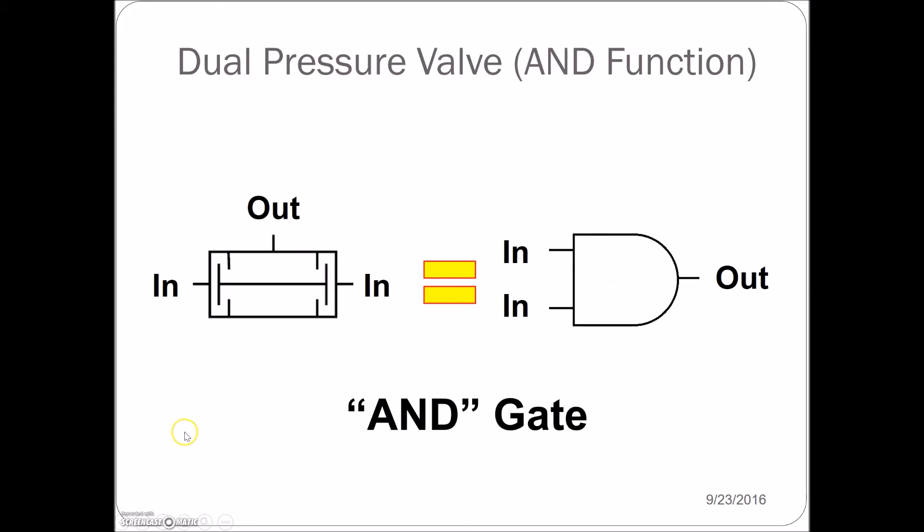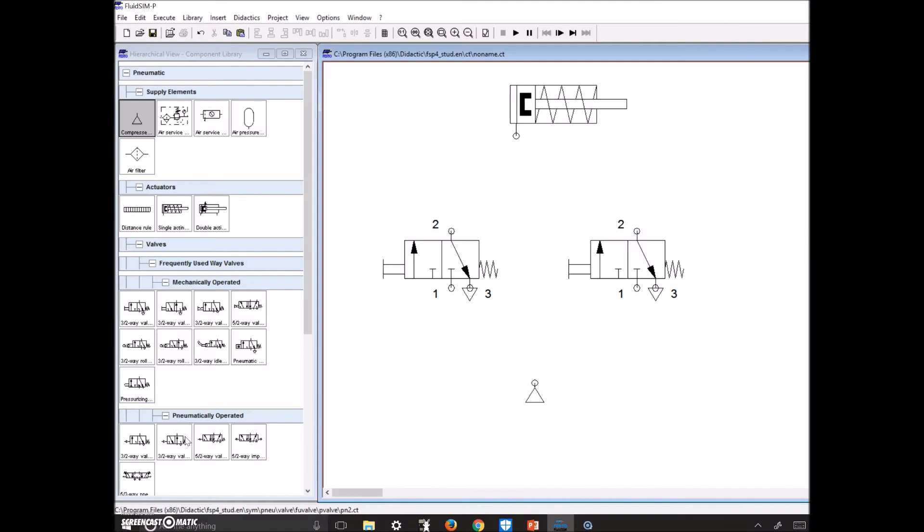All right guys, let's hook this up on FluidSim and see how it works. Now you've probably clued into the fact that you can leave each of these components on the page here, delete your previous piping, and then throw in for the next lab. So we need an AND. We need to feed both of these, so we're going to click, hover over this line, and drop it in.